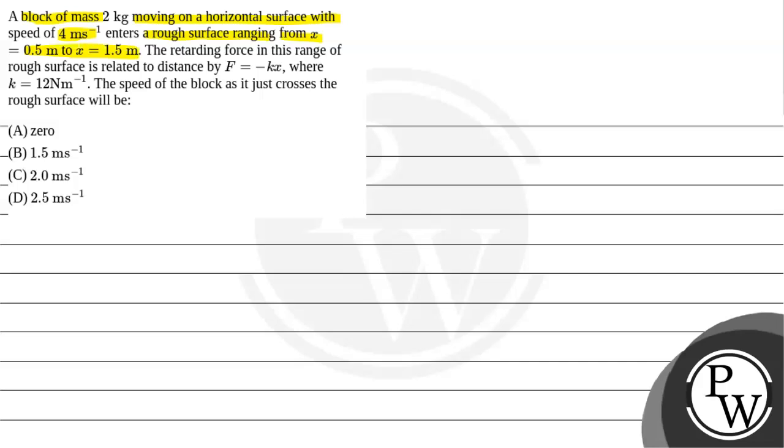.5 m. The retarding force in the range of rough surface is related to distance by f equal to minus kx where k is 12 N per m. The speed of the block as it just crosses the rough surface will be, and the options are given below. So let's see the key concept that we will use here to solve this question.